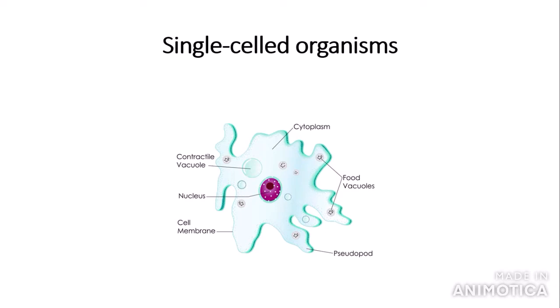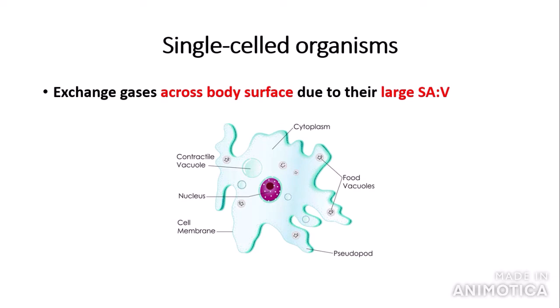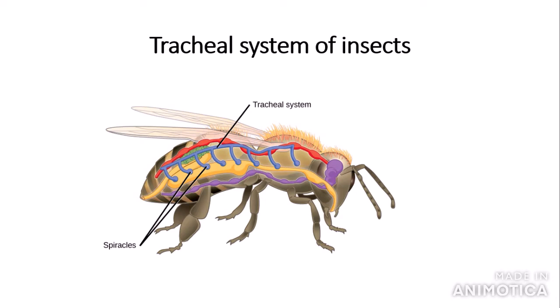Now we'll look at the adaptations of certain types of organisms to gas exchange. Single-celled organisms — using the example of an amoeba, which is a eukaryotic single-celled organism — carry out gas exchange across their body surface. This is a fairly simple concept due to their large surface area to volume ratio, so they don't have any special adaptations.